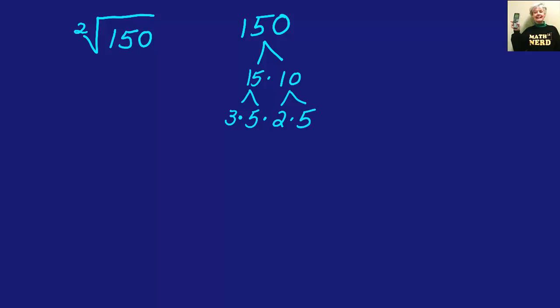So 150 equals 3 times 5 times 2 times 5, and if I write those in order I can say that 150 equals 2 times 3 times 5 times 5.